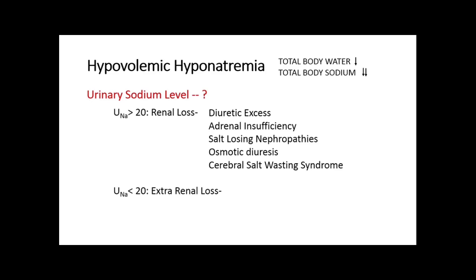The fourth cause of renal loss is cerebral salt wasting syndrome — a condition of inappropriate natriuresis in response to cerebral injury such as subarachnoid hemorrhage, traumatic brain injury, encephalitis, or meningitis. One proposed mechanism is that the brain releases natriuretic peptide that directly acts on the kidney to cause natriuresis. Another theory is that cerebral injury increases sympathetic outflow, raising renal perfusion pressure and causing renal sodium loss.